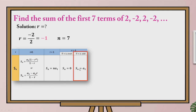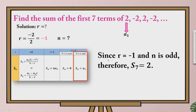Based on the geometric sequence, we only need to identify the first term, which is 2. So we can say that since r is equal to negative 1 and n is odd, therefore the sum of the first 7 terms of the geometric sequence is just equal to 2.